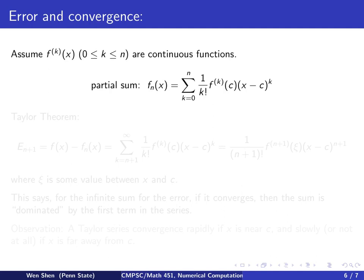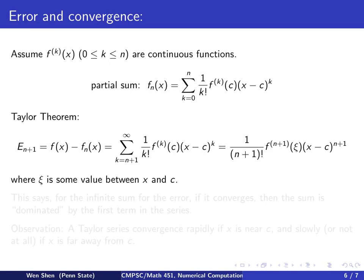Let's look at the error for using Taylor series with only finitely many terms. Assume the function can be differentiated k times, so it's in C^k. I'm introducing the term called partial sum, which is the Taylor series taking only the first n+1 terms. I call this f_n(x), where n indicates how many terms I'm taking. Here is the Taylor theorem.